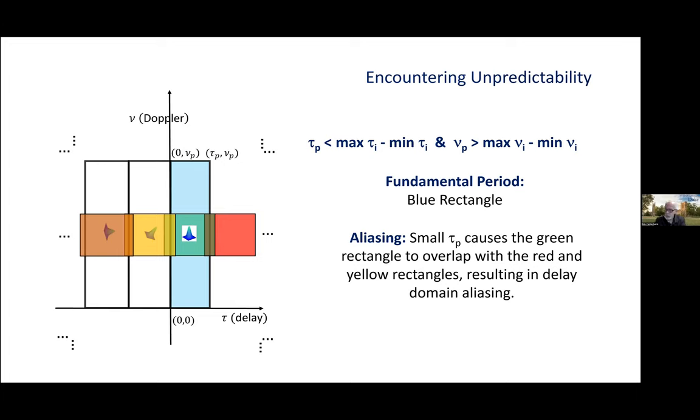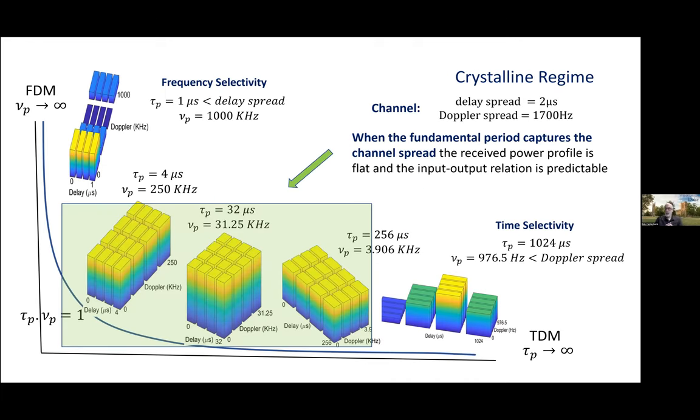When that's not the case, we get unpredictability. So, here the fundamental period does not capture the channel spread. The Doppler domain period is greater than the channel Doppler spread. But the delay domain period is less than the channel delay spread. So, the green rectangle overlaps with the red and yellow rectangle, resulting in delay domain aliasing.